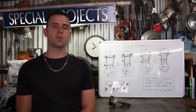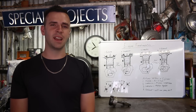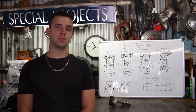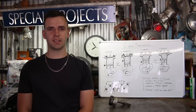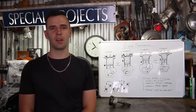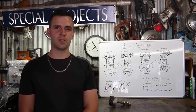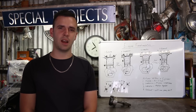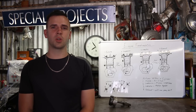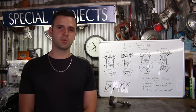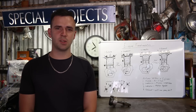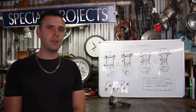In today's video we're going to be discussing engine fundamentals, specifically the actions within a cylinder. The basic parts of an engine are the cylinders, pistons, connecting rods, and the crankshaft. The pistons are a sliding fit within the cylinder and they have rings around them called compression rings, which provide a gas-tight seal against the cylinder wall.